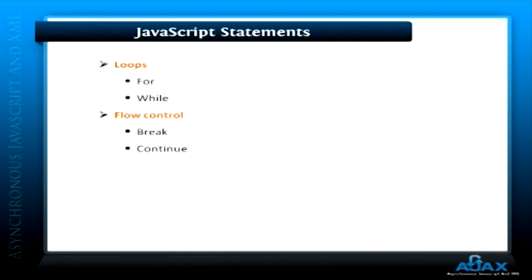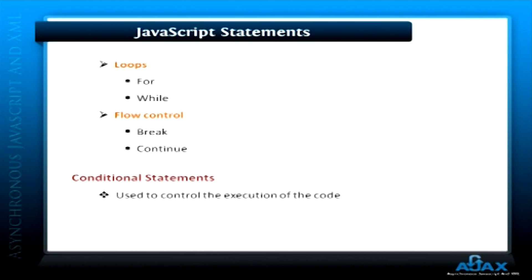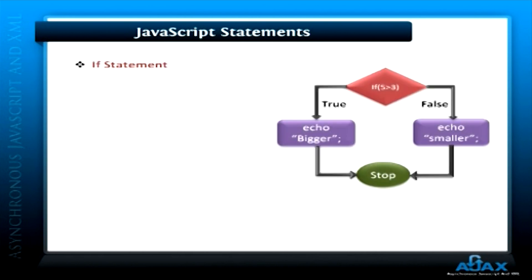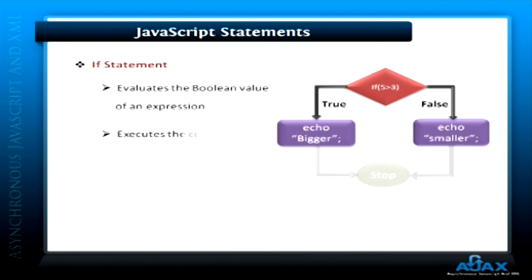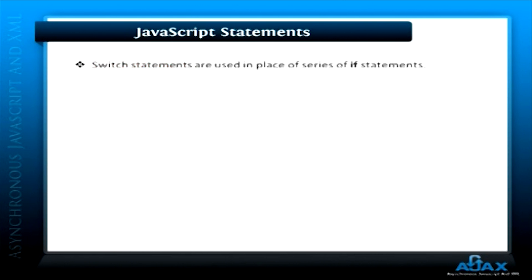Let's discuss them one by one. First, conditional statements — if, else, and switch statements fall under this category. These statements are used to control the execution of the code in our program. The if statement evaluates the boolean value of an expression and then executes the code based on the result of the evaluation. Switch statements are used in place of a series of if statements.